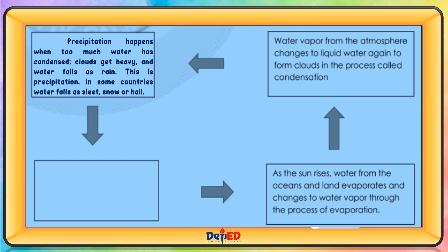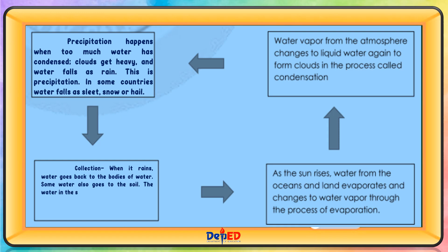In some countries, water falls as sleet, snow, or hail. Collection: When it rains, water goes back to the bodies of water. Some water also goes to the soil and is absorbed by the plant. Once collected, it goes to bodies of water and undergoes the process of evaporation again.